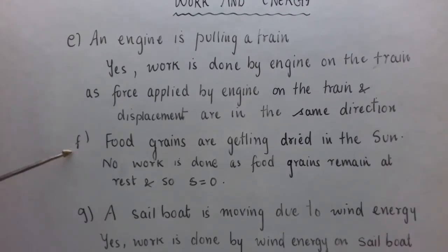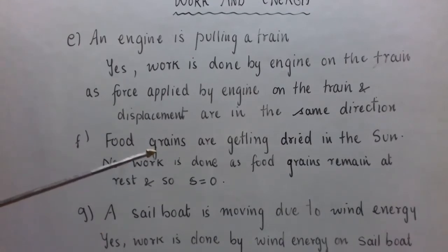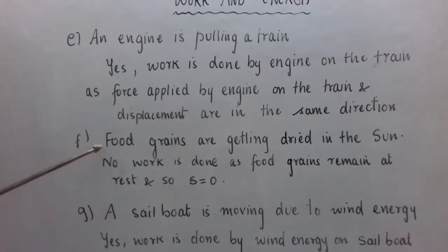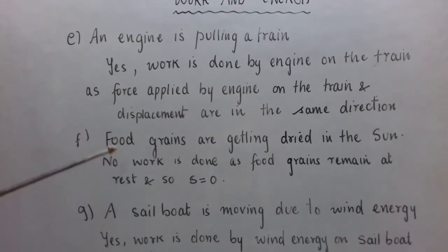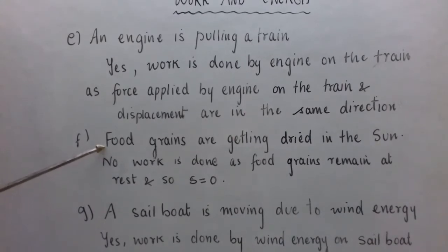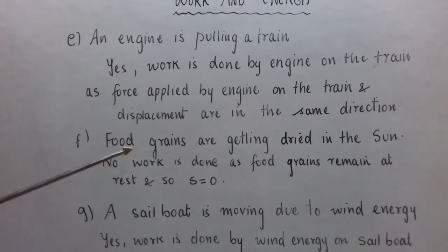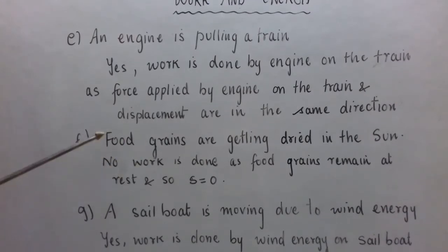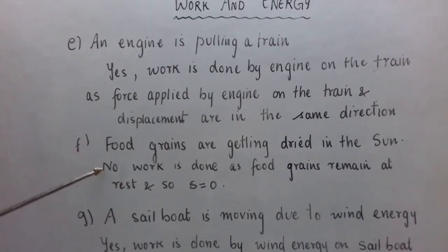Part F: Food grains are getting dried in the sun — is work done or not? When food grains are dried in the sun, moisture is removed with the help of solar energy, but the food grains remain at rest and do not move. No work is done because food grains remain at rest and displacement is zero. So W = 0.